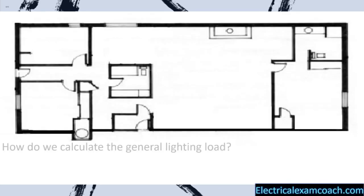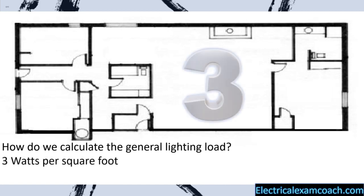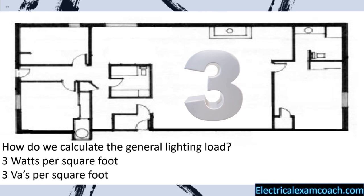The first question we have to ask is how do we calculate the general lighting load? We're not going to calculate it per receptacle or per light fixture — thankfully, they've made it very simple. We're going to calculate it at 3 watts per square foot. For all general lighting and all general receptacles, all we have to do is take the square footage of the dwelling unit and multiply it by 3. The code language actually uses VAs, so 3 VAs per square foot.